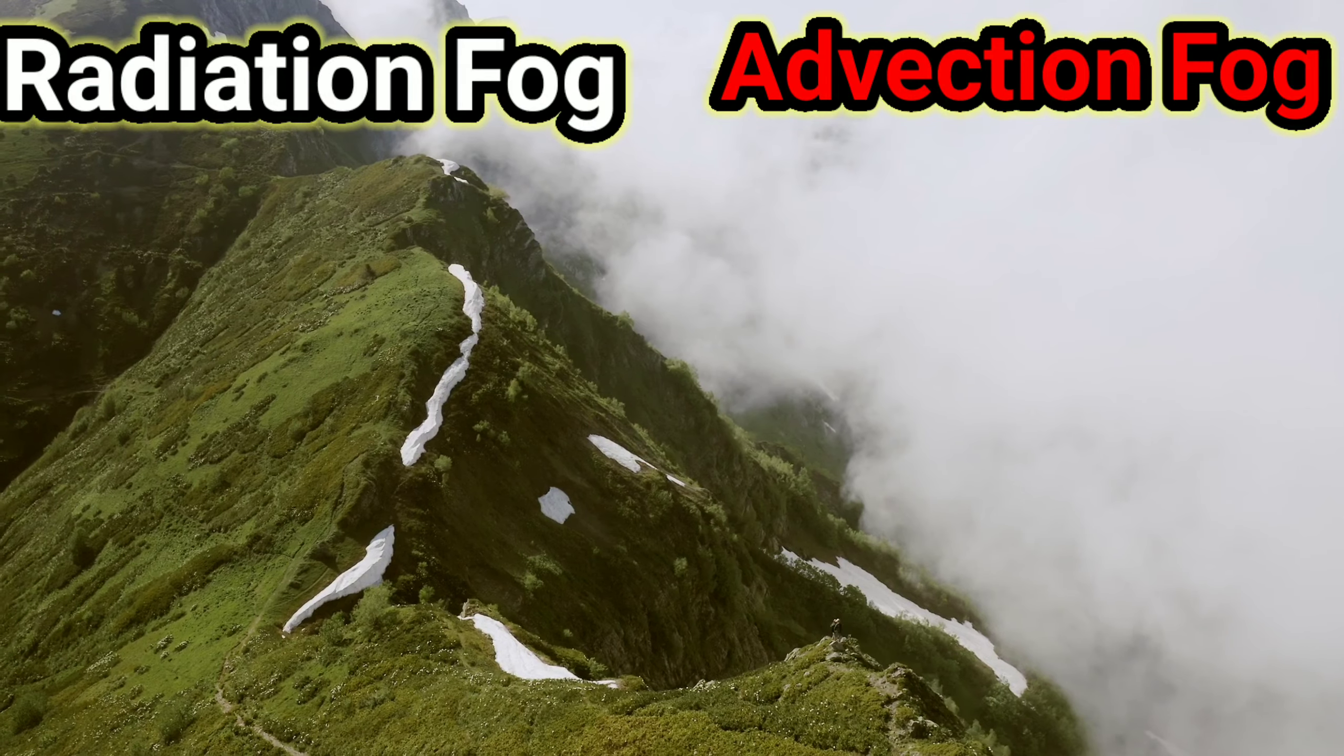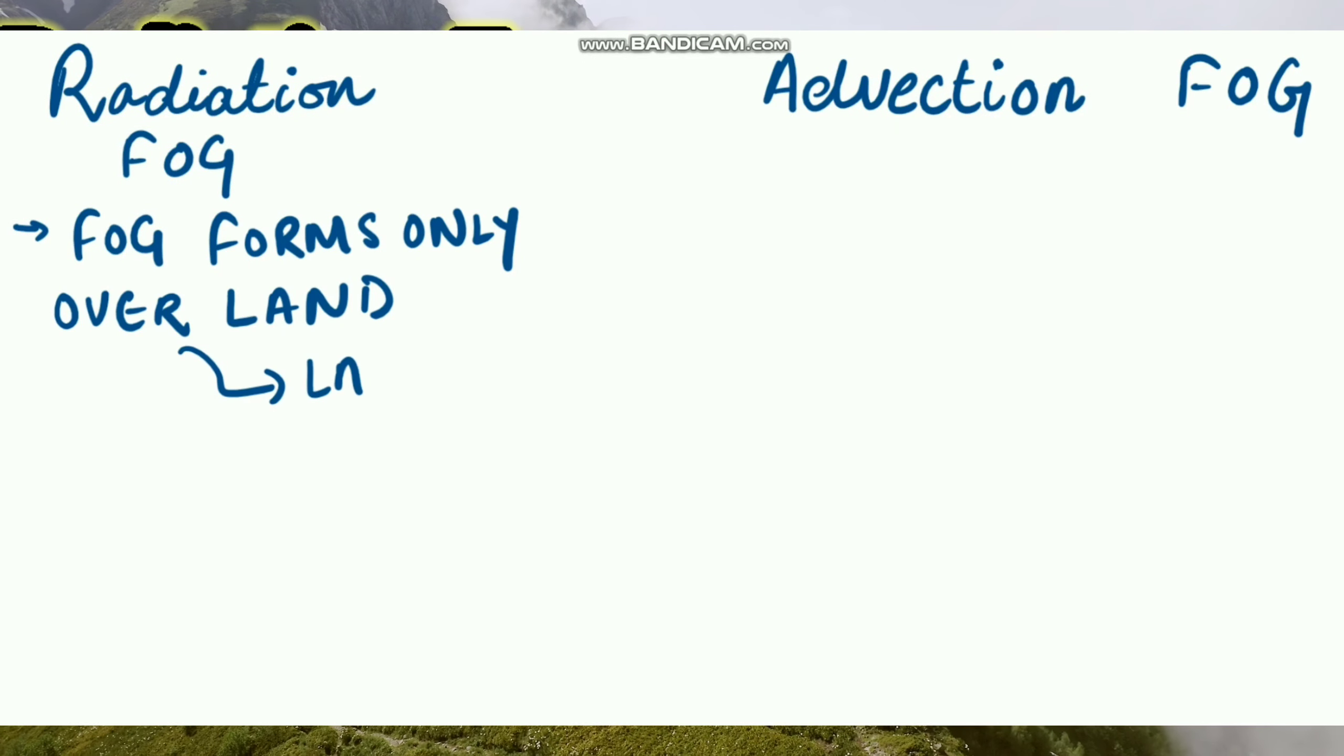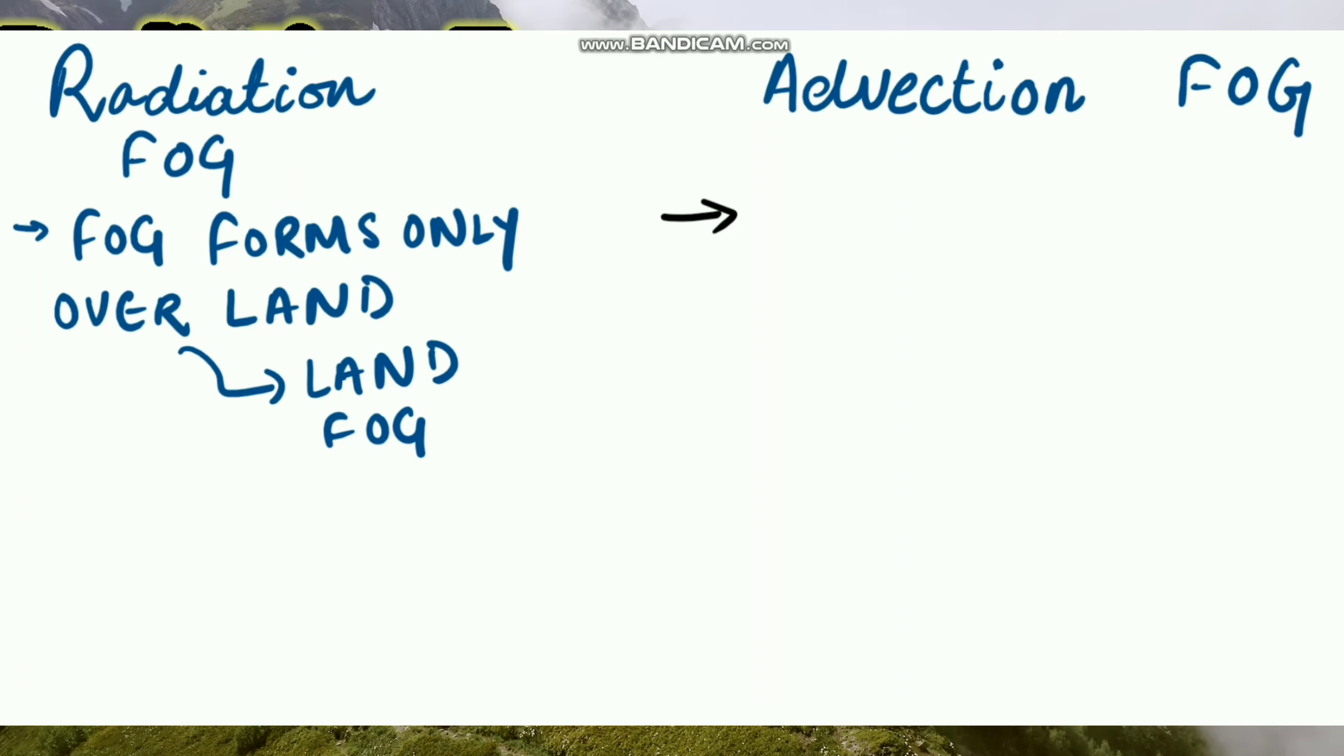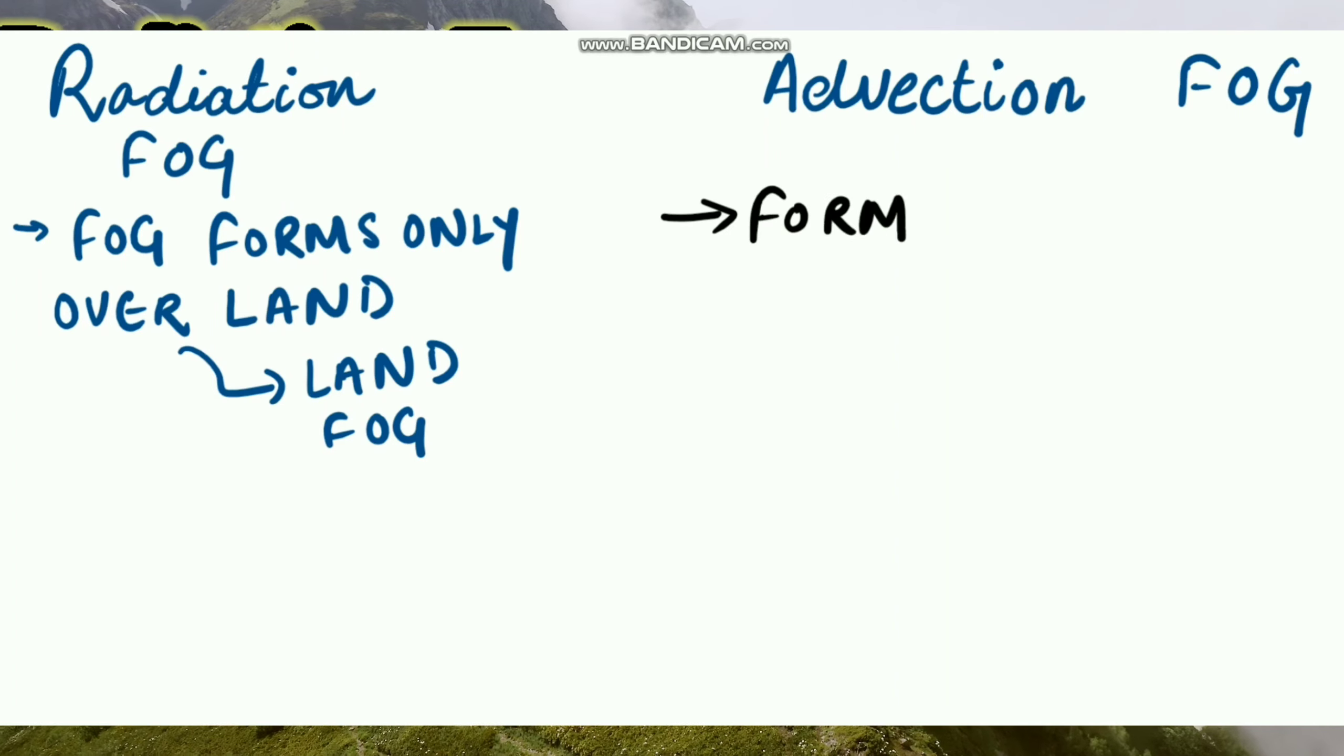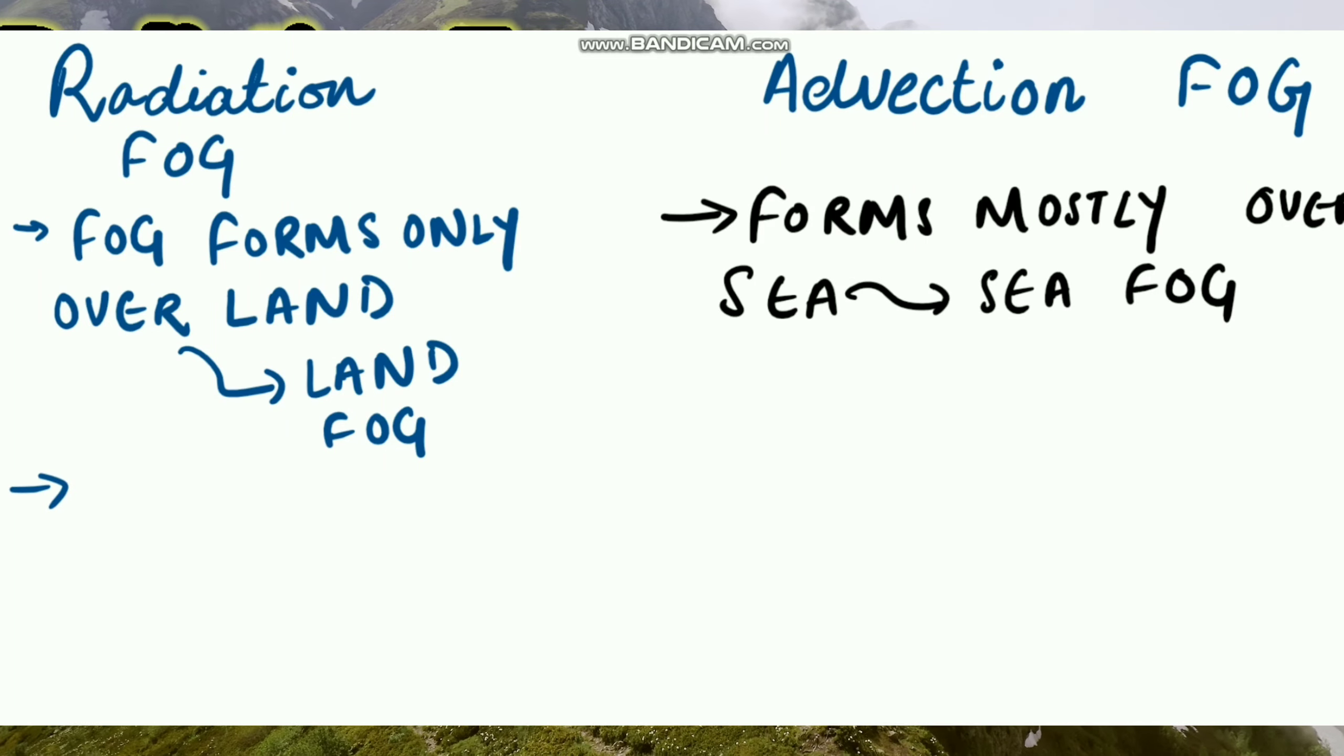Radiation fogs generally form over land and therefore they are called land fogs. Advection fogs are mostly formed over sea, therefore they are called sea fogs.